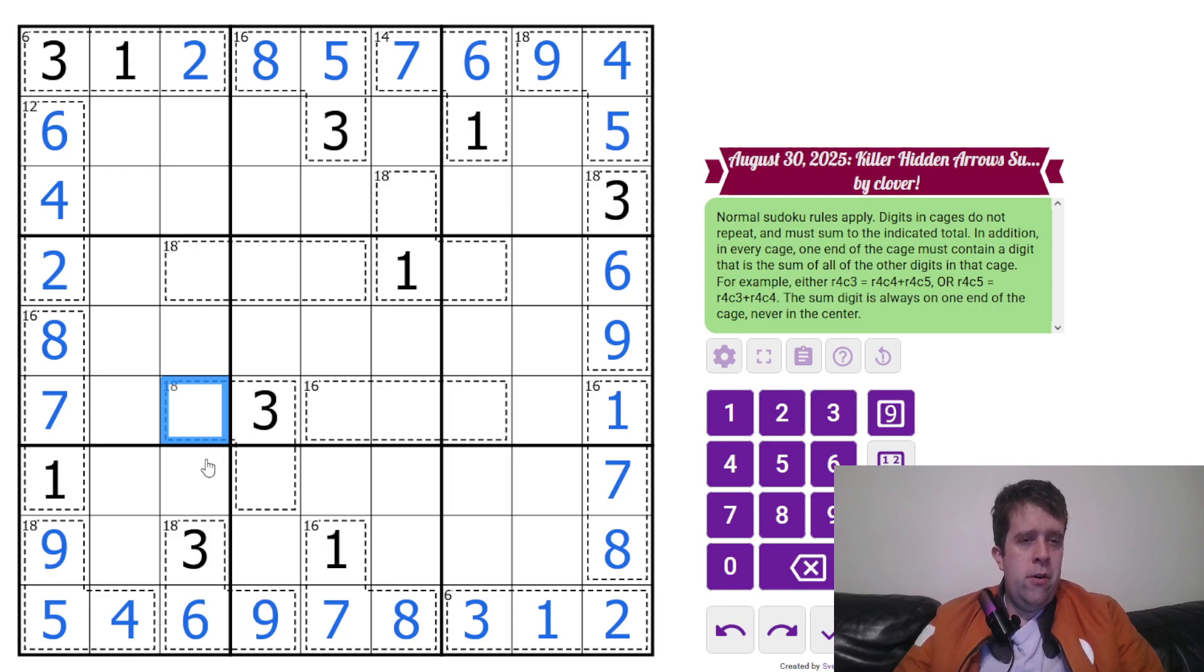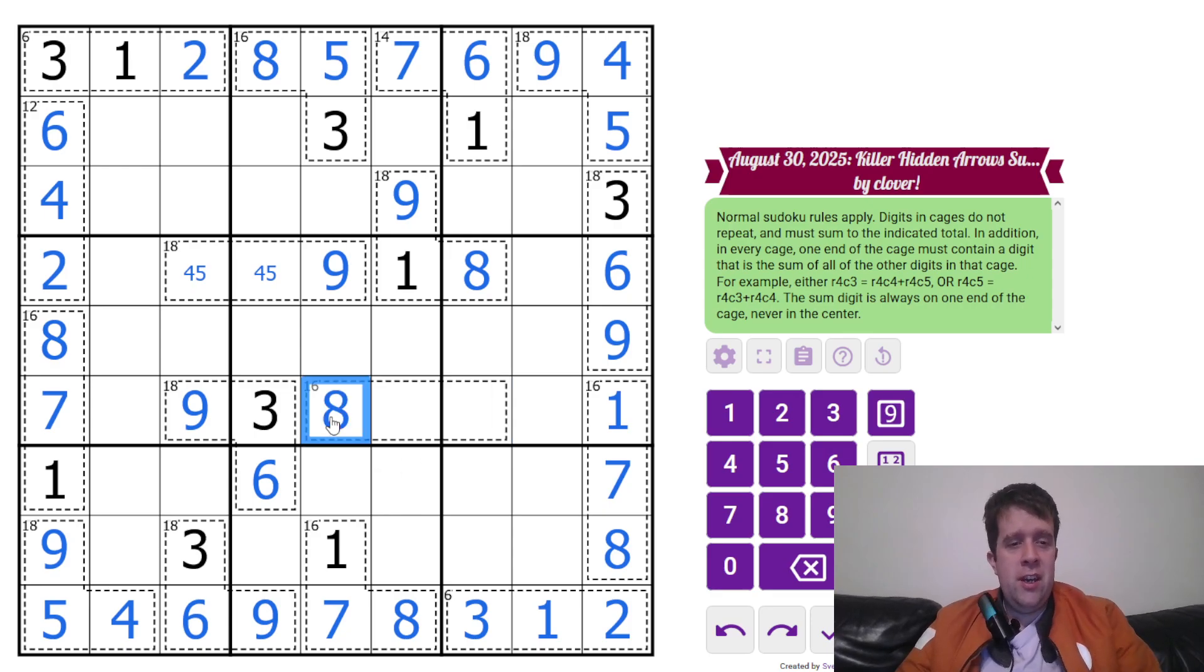Now, what else do I know? I know that this 18 cage needs to have a nine at one end, and it can't be that one, so it has to be nine, three, and six. Nine can't go here, so nine has to go here, which puts a nine up here. This can't be one, eight, two, seven, or three, six, so it must be four and five. I don't quite know which way that goes yet, but that's fine. This has to be an eight. That eight there rules eight from being out there in the 16 cage, so eight has to go here.